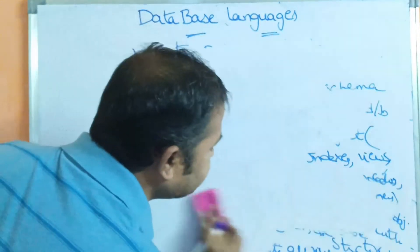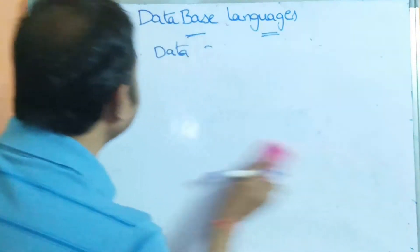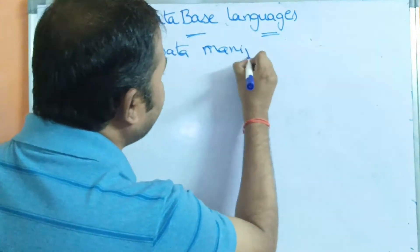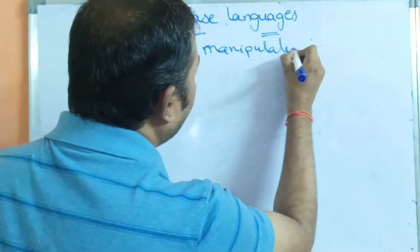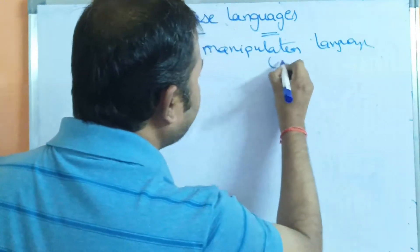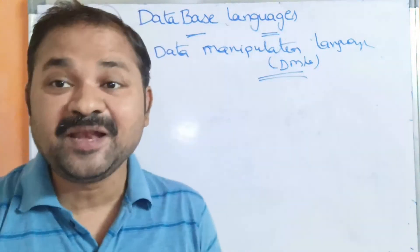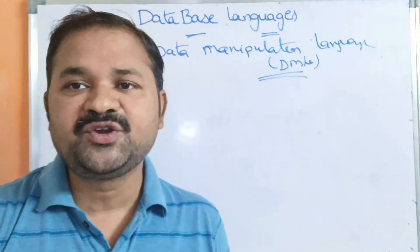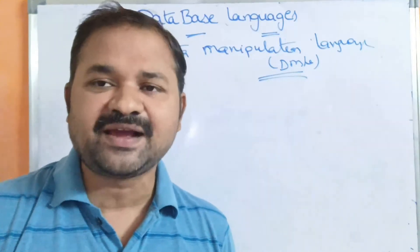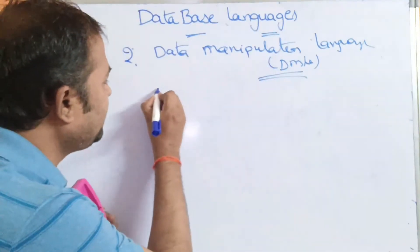Now let us see the second database language, that is DML. DML stands for Data Manipulation Language. It is mainly useful in order to manipulate the database — to perform operations on the database, we use DML commands.